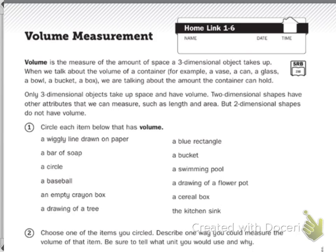Only three-dimensional objects take up space and have volume. Two-dimensional shapes have other attributes that we can measure, such as length and area, but two-dimensional shapes do not have volume.